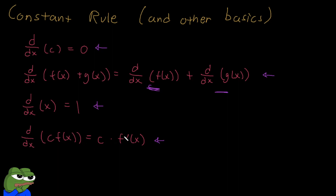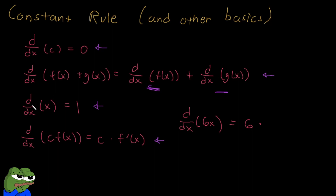Let's do a quick example. What's the derivative of 6x? We can see it's in the form where we have a constant 6 in front of a function, which is just x. So it's just the constant 6 multiplied by the derivative of x, which by the earlier rule is just 1. So the derivative of 6x is just 6.